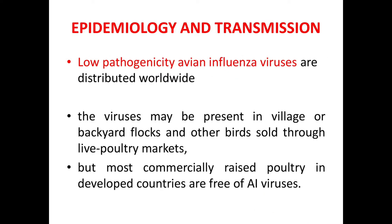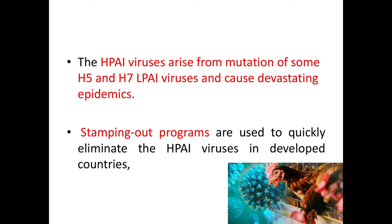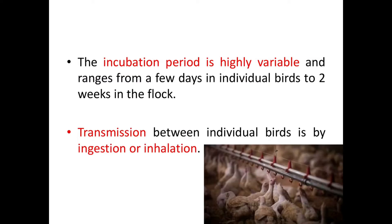Regarding epidemiology and transmission: low pathogenicity avian influenza viruses are distributed worldwide, and the virus may be present in village or backyard flocks and other birds through live poultry markets. Most commercially raised poultry in developed countries are free of AI viruses. Highly pathogenic avian influenza viruses arise from mutation of some H5 and H7 LPAI viruses and cause devastating epidemics. Stamping out programs are used to quickly eliminate HPAI and LPAI viruses in developed countries.